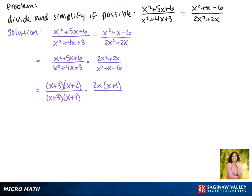And in the denominator, the factors of negative 6 that make positive 1 are positive 3 and negative 2.